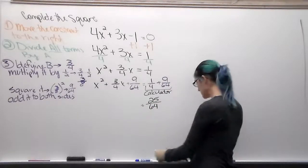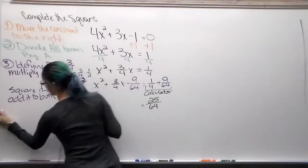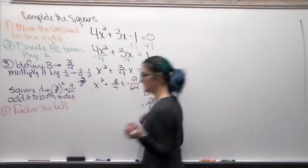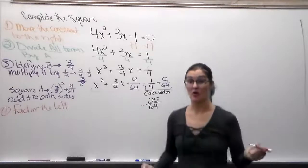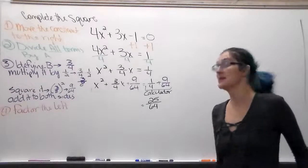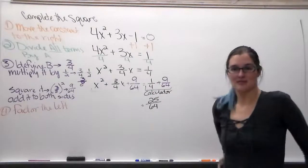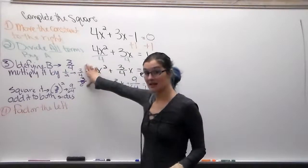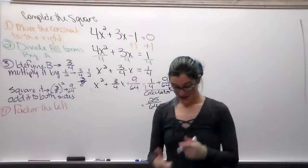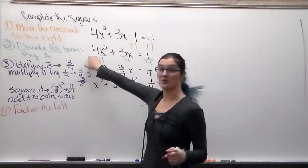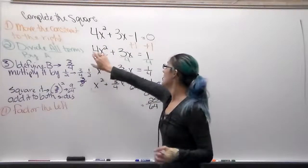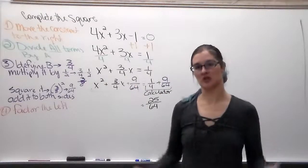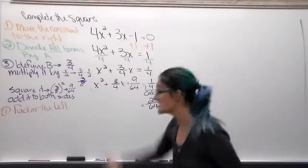Now for the left side, we need to factor. That would be terrible and horrible to factor normally — which is exactly why completing the square is so awesome. The whole point of Step 3 was to make the left side into a perfect square trinomial. It won't be a perfect square trinomial if you have numbers out front, which is why we had to divide everything by a and move the constant first.